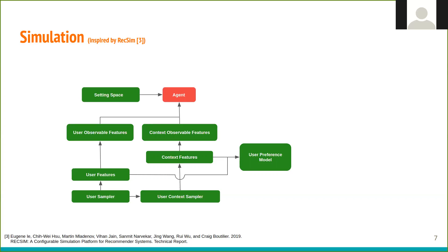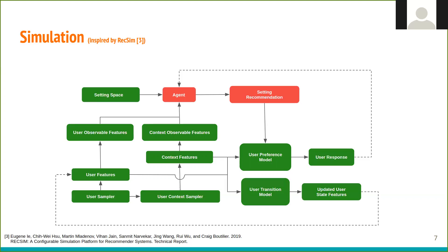The agent observes only the observed components of user and context features, and based on them, it offers a setting recommendation to the user. The user evaluates the recommendation, sending a noisy response back to the agent, which updates its knowledge about user preference. After interacting with the agent, user state might also undergo a change, for example in engagement, which will have an impact on future interactions.